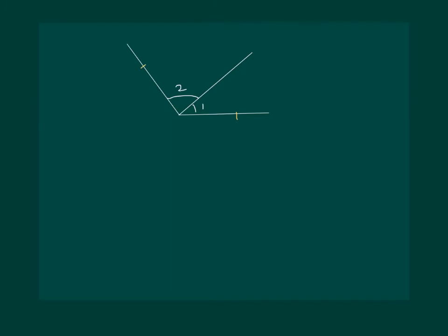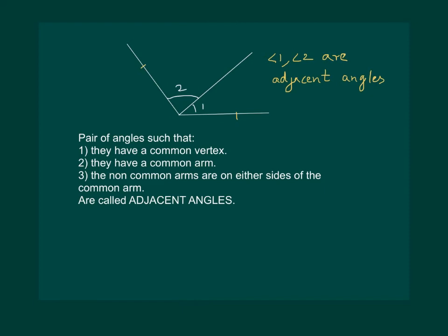For such cases, we can say that angle 1 and angle 2 are adjacent angles. Hence we can define that a pair of angles with a common vertex, a common arm, and non-common arms on either side of the common arm are called adjacent angles.